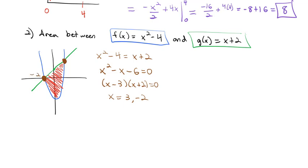The intersection on the left is at x equals negative 2, and on the right is x equals 3. So we're integrating from x equals negative 2 all the way up to 3. The green function g of x is on top, so that's our positive x plus 2. The blue function x squared minus 4 is on the bottom — we subtract it, which changes the sign to give negative x squared plus 4 dx.